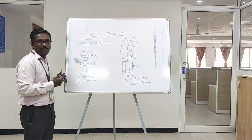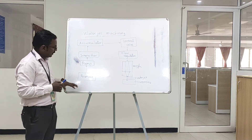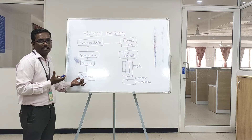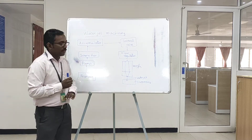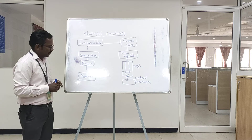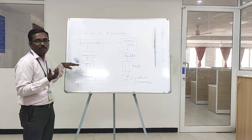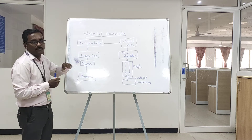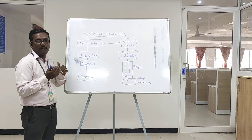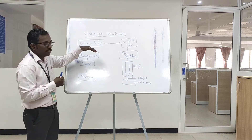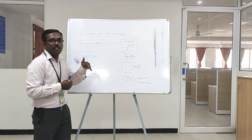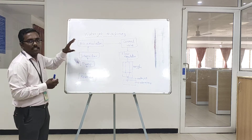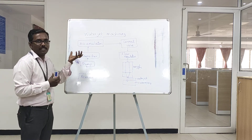Now we can see the function of each and every component. The first one is the reservoir, which is used mainly to store the water that is to be used to remove the surface. The next one is the pump, which is used to pump the water from the reservoir. Then the intensifier, which is used to pressurize the water to the required pressure. Normally the pressure range is from 200 to 400 megapascals.